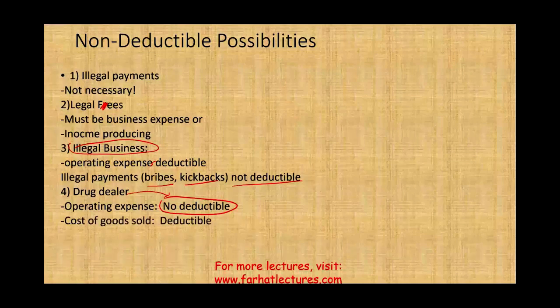However, the IRS allows you to deduct your cost of goods sold. So your cost of goods sold — whatever product you bought, believe it or not, it's deductible. The product that you bought because you invested the money. But vehicle expense, transportation expense, guns, anything like that to operate your business — that's not deductible. Or for example, having employees or contractors — that's not going to be deductible as a drug dealer.